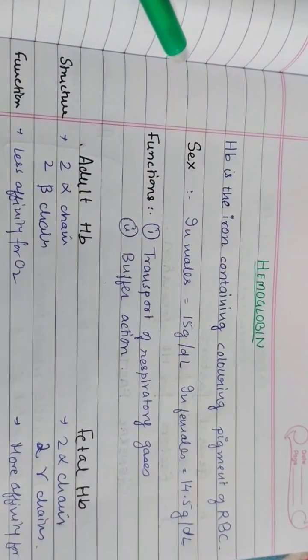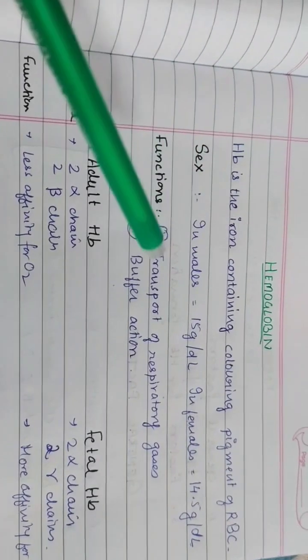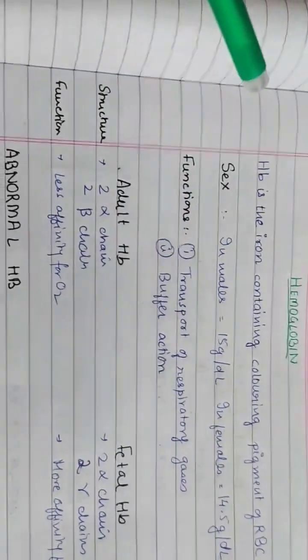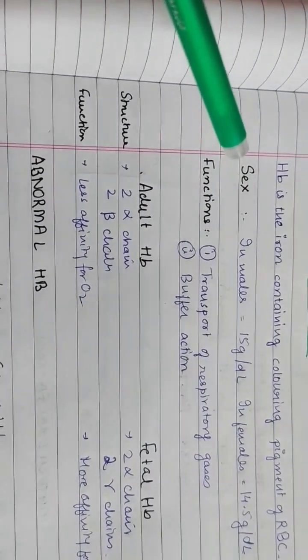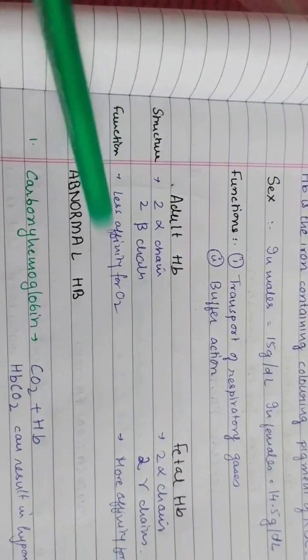Hemoglobin is an iron-containing coloring pigment of RBCs. In males, it is 15 grams per deciliter; in females, 14.5. Its function is to transport respiratory gases and in buffer actions.